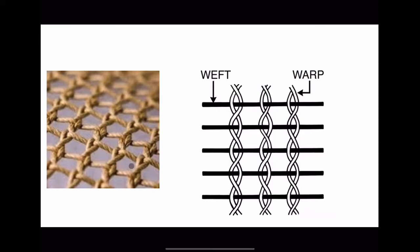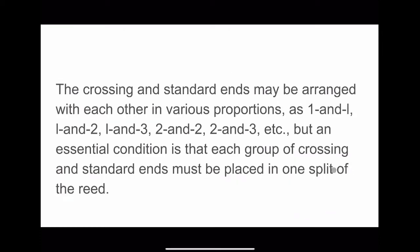This is another very good example of lino fabrics. The crossing and standard ends may be arranged with each other in various proportions — like one standard end and one crossing end, or stripes of standard and crossing ends such as two standard and two crossing, three standard and two crossing, or vice versa. There are practically unlimited ways, but an essential condition is that each group of crossing and standard ends must be placed in one split of the head.